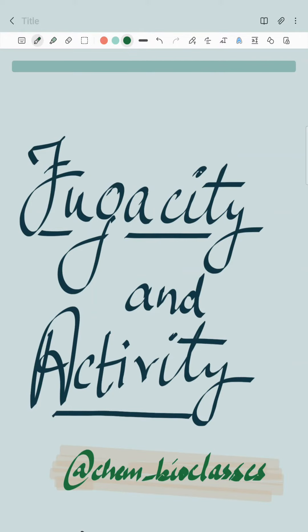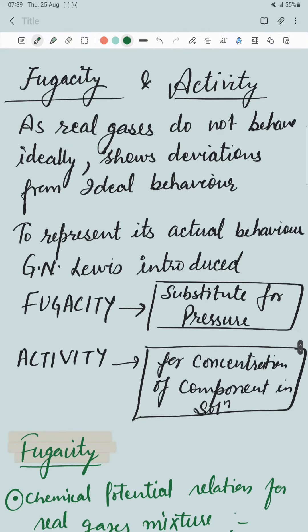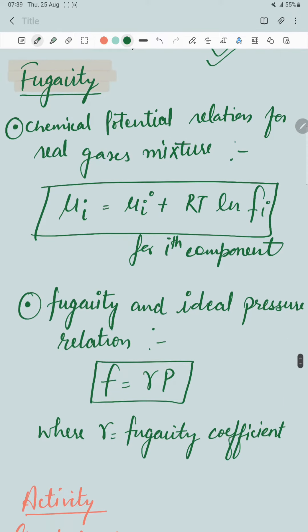Hello everyone, welcome to Chem Bio Classes. Today our topic is fugacity and activity. What is fugacity and activity? As real gases do not behave ideally, as we know, they show deviations from ideal behavior. To represent their actual behavior, G.N. Lewis introduced fugacity as a substitute for pressure and activity as a substitute for concentration of component in a solution.